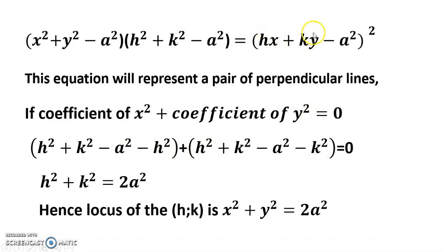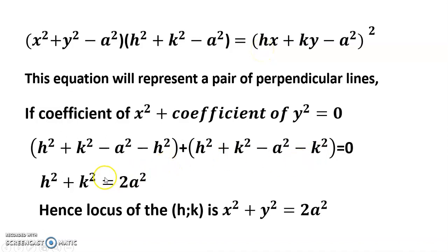The coefficient of x² gives an h² term and the coefficient of y² gives a k² term. After adding and simplifying, we get h² + k² = 2a². So the locus is x² + y² = 2a², confirming the result from the first method.